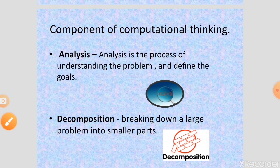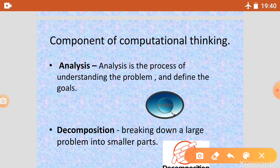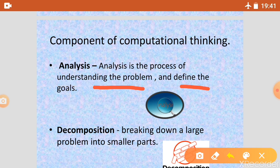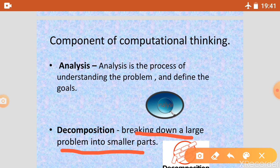First is Analysis. In Analysis we try to understand the problem and define our goals — what we have to do. So Analysis is the process of understanding the problem and defining goals. Next is Decomposition — we break down a large problem into small parts. Because the problem is large, we divide it into parts so we can do our work effectively and solve it more easily.